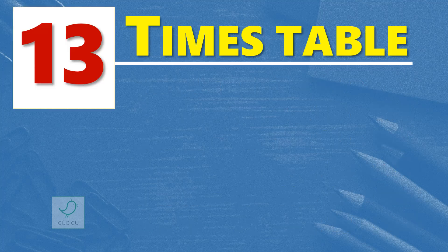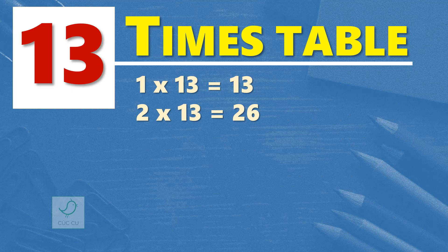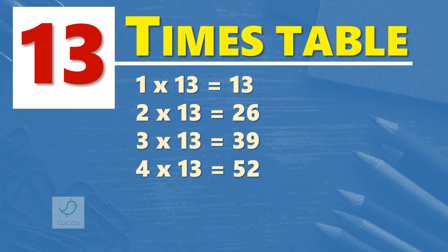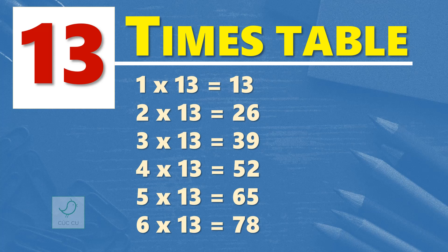13 times table. 1 times 13 is 13. 2 times 13 are 26. 3 times 13 are 39. 4 times 13 are 52. 5 times 13 are 65. 6 times 13 are 78.